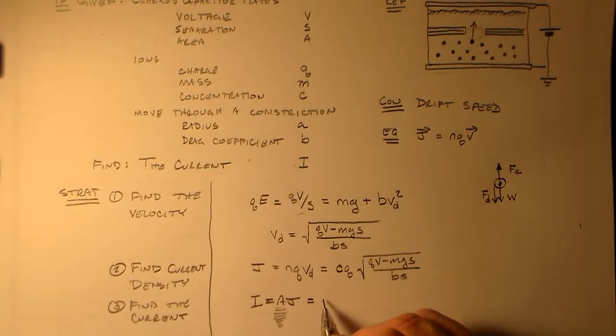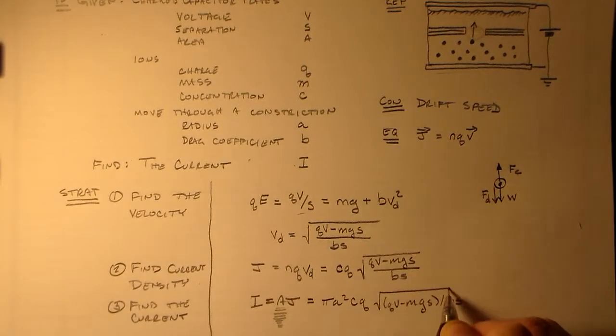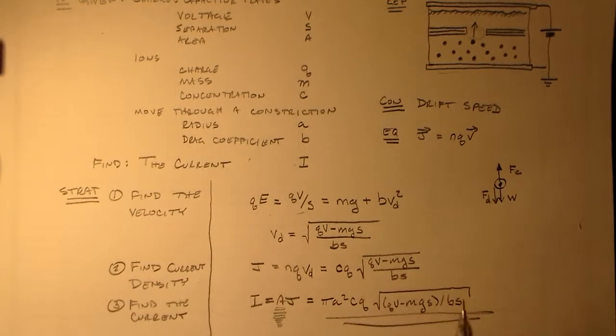We'll call that pi A squared. We'll multiply that by C and Q and all the good stuff. QV minus MgS divided by BS. And then we're done. We're okay with that. So, if you think that's good, I think that's good. And we can all be good. Bye now.